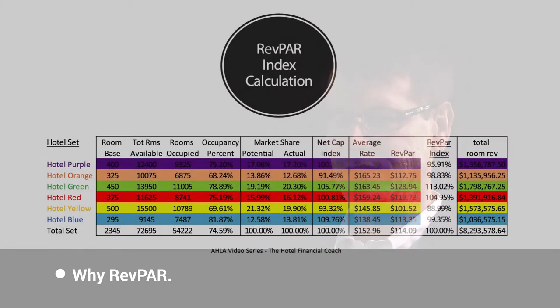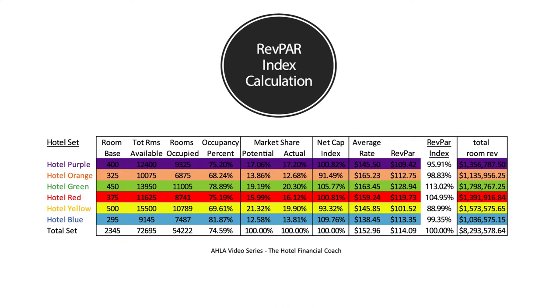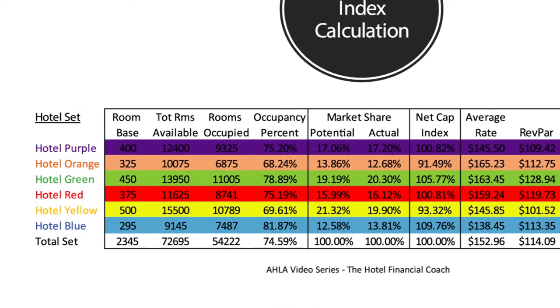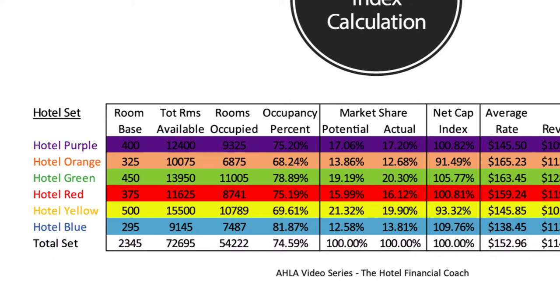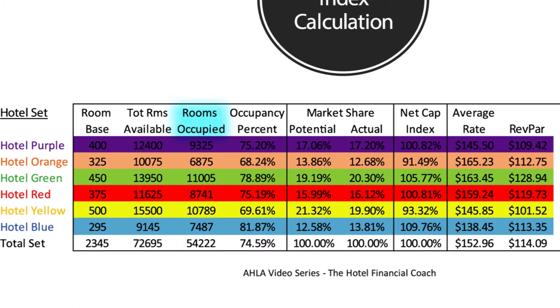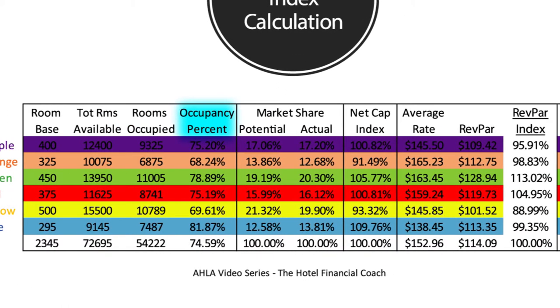Understanding whether your hotel has a positive index or a negative index is key. On the second slide, we see how the calculation is performed. It all starts by understanding the room base in each one of the hotels, extrapolating the total number of rooms available for the month, dividing by the actual rooms occupied — the same ones reported into STR — calculating the occupancy, and comparing that to the potential capture. The difference between the potential and the actual produces the net capture index, multiplied by the average rate to equal the REVPAR.